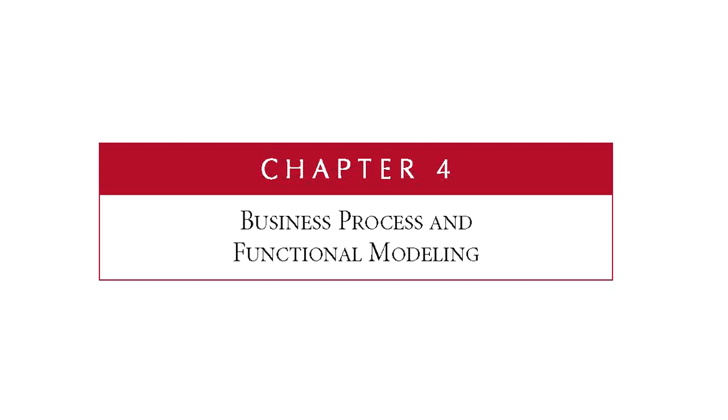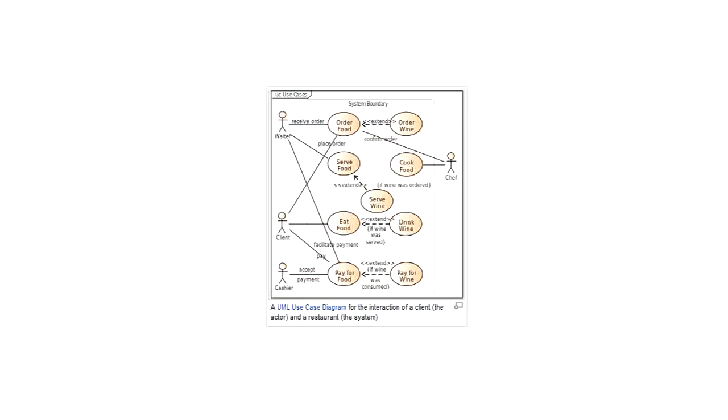Let's think of the use case diagram we had before about ordering at the restaurant. We have a variety of different use cases to choose from. We're going to pick one that has a level of detail we'd like to delve into and get a better understanding of the steps involved. So we're going to look at ordering food, and we'll start by brainstorming some of the steps that might potentially be part of placing an order.